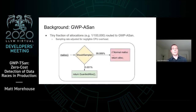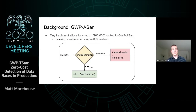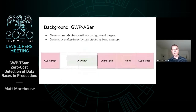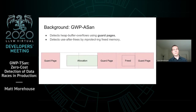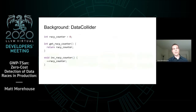GWP-ASAN integrates with whatever memory allocator you use. You simply splice a tiny fraction of allocations to GWP-ASAN, and by adjusting this sampling rate, you can achieve as low overhead as you want. Allocations sent to GWP-ASAN give buffer overflow and use-after-free detection. GWP-ASAN does this using guard pages and by mprotecting free memory, but it does not detect any data races. For that, we need a new mechanism.